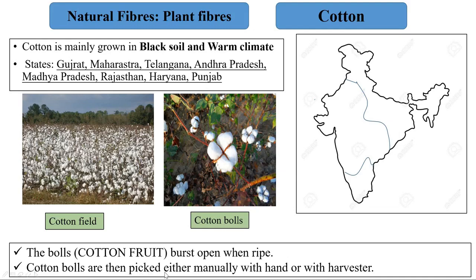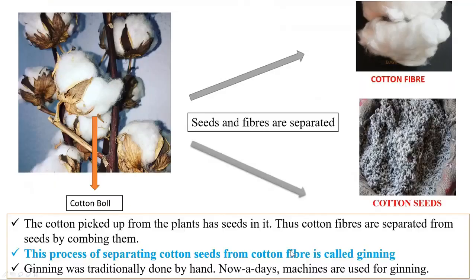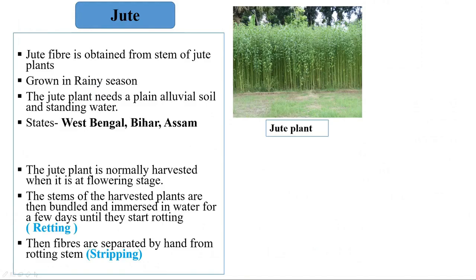The cotton picked from plants has seeds in it. Cotton fibers are separated from seeds by combing — this process is called ginning. Ginning was traditionally done by hand; nowadays machines are used for ginning.